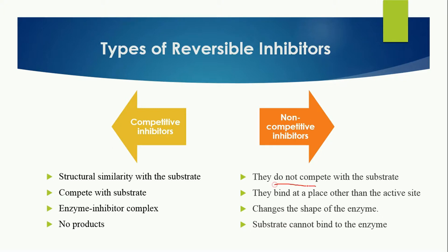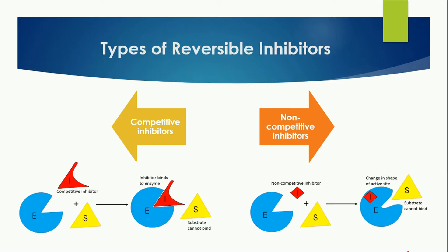Non-competitive inhibitors do not compete with the substrate because they do not have structural similarity with it. However, they bind at a place other than the active site, and as a result they change the shape of the enzyme. When the shape of the enzyme changes, the enzyme can no longer bind with the substrate. In this diagram, you can see the non-competitive inhibitor binds elsewhere on the enzyme, but the shape of the active site is changed as a result, so the substrate cannot bind.